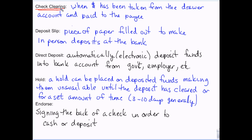Direct deposit is automatically depositing money into your account — it's an electronic deposit of a paycheck or a tax return. I can't direct deposit money into anybody's account because I'm not an entity. It has to be like a business or a government set-up thing, so usually it's just government checks or paychecks.